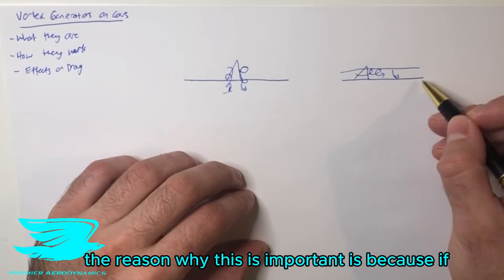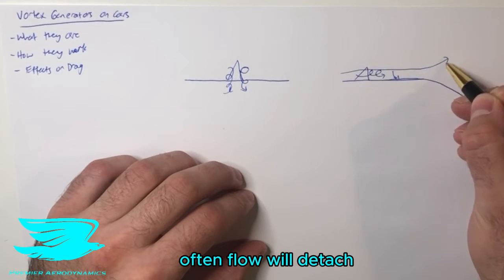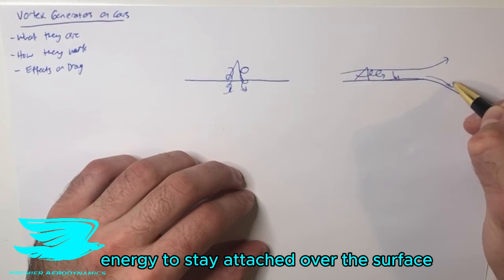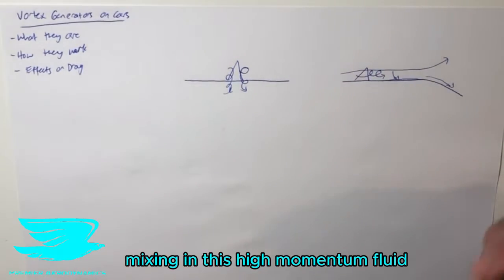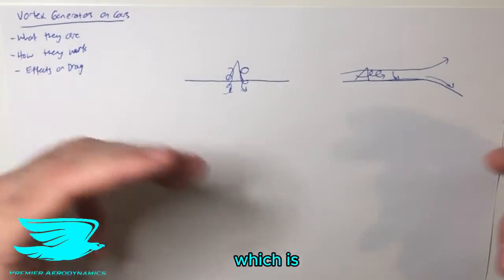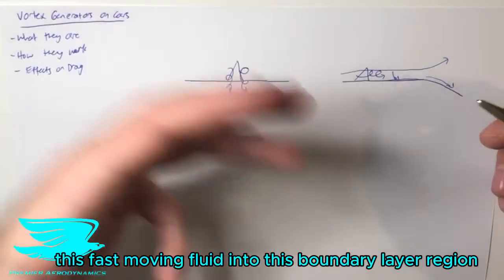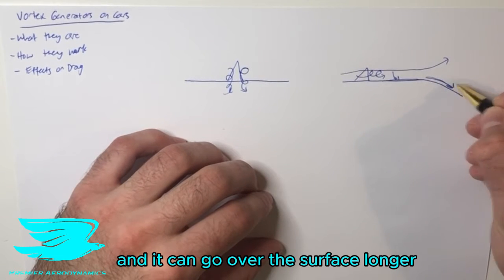The reason why this is important is because if you start to have a curved surface, often flows will detach. This is because they simply do not have enough energy to stay attached over the surface. So by having this vortex generator here, mixing in this high-momentum fluid—which is generally the technical term for what it does—this fast-moving fluid into this boundary layer region keeps the flow attached, and it can go over the surface longer.